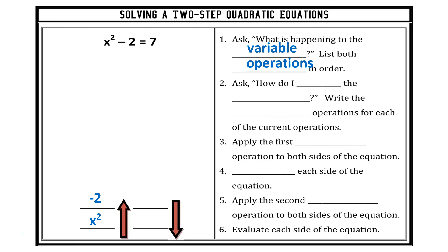Question two: how do I undo the operation? That's a simple way of saying, what are my inverse operations? How can I find those identities and cancel out those values to get my variable by itself? I need to write the inverse operations for each of the current operations. If I took the time to write it out, I now have my values and operations in order, so I just need to write the inverse operations — it automatically puts them in the inverse or backwards order.